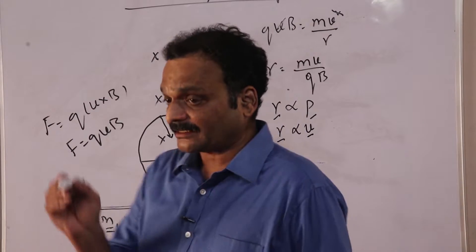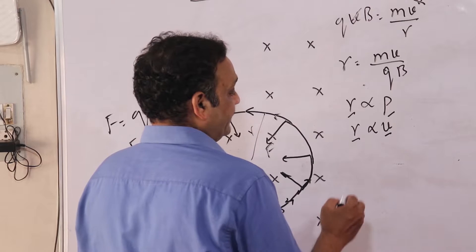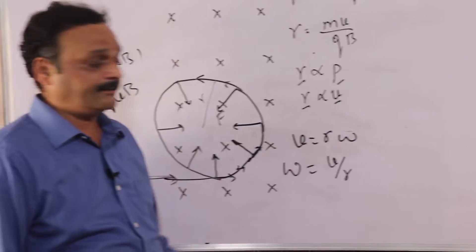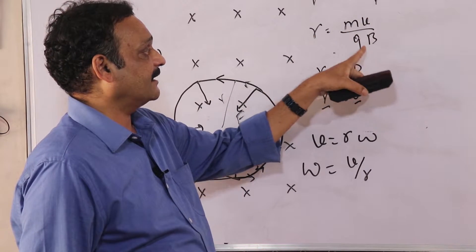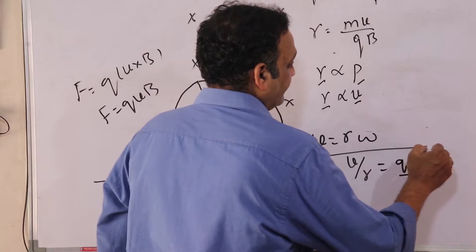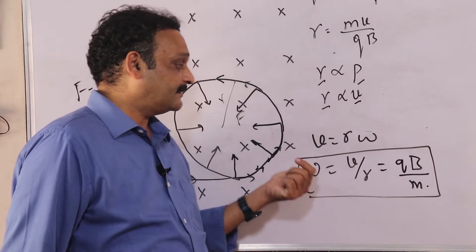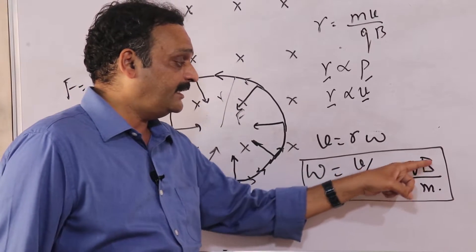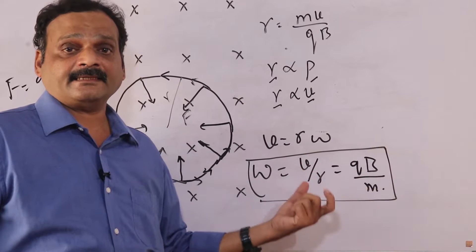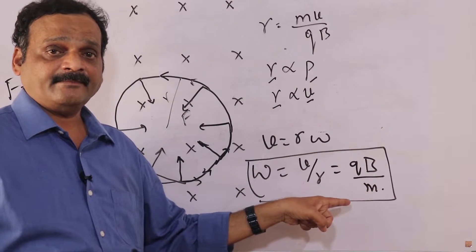Since this is circular motion, the motion keeps repeating. The time period can be derived using v = rω, so angular frequency ω = v/r. Substituting r = mv/qB, we get ω = qB/m. This is the angular frequency of the particle in its circular path. Importantly, note that the angular frequency does not depend on the velocity of the particle — it depends only on qB/m. Whether the particle moves with high or low velocity, it will move with a constant angular velocity.